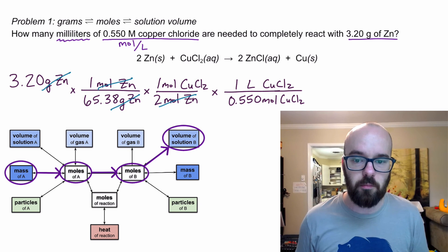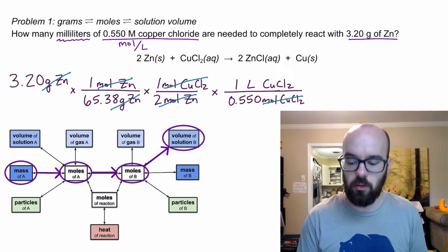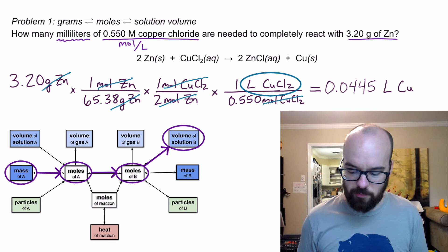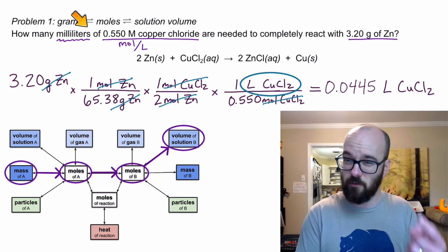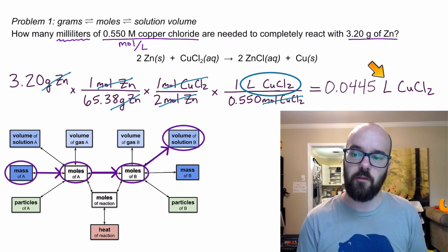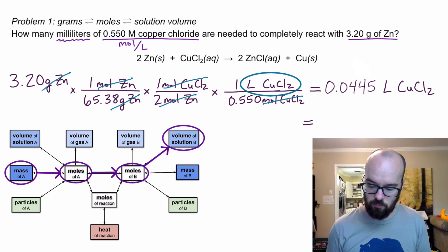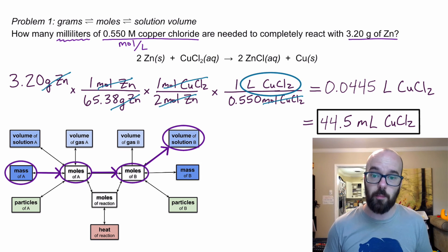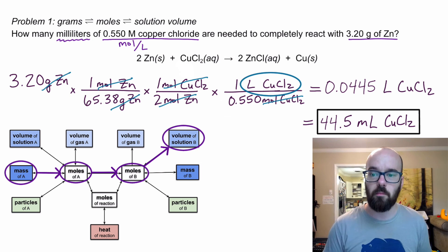The things that cancel out: grams of zinc, moles of zinc, moles of copper chloride — I'm left with liters of copper chloride as my units. I get 0.0445 liters. I want to convert to milliliters: going from liters to milliliters means going to a smaller unit, so the number gets bigger. I move the decimal three spaces to the right and get 44.5 milliliters of copper chloride. That's an example of a grams-to-moles, moles-to-moles, and solution stoichiometry moles-to-liters conversion.